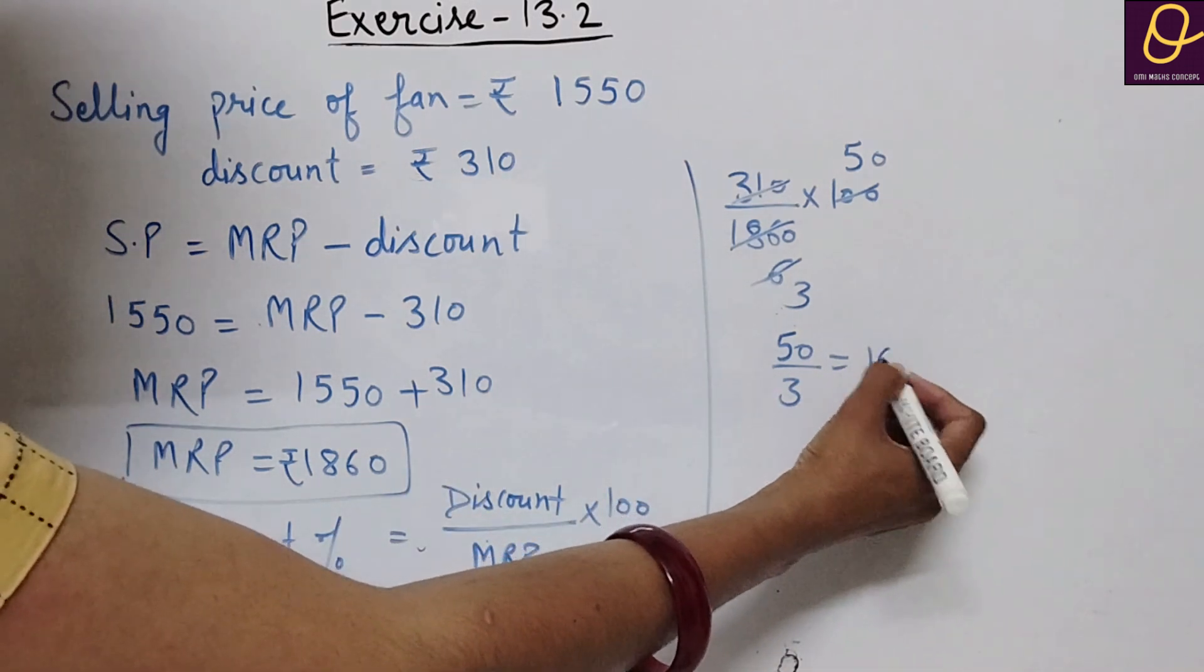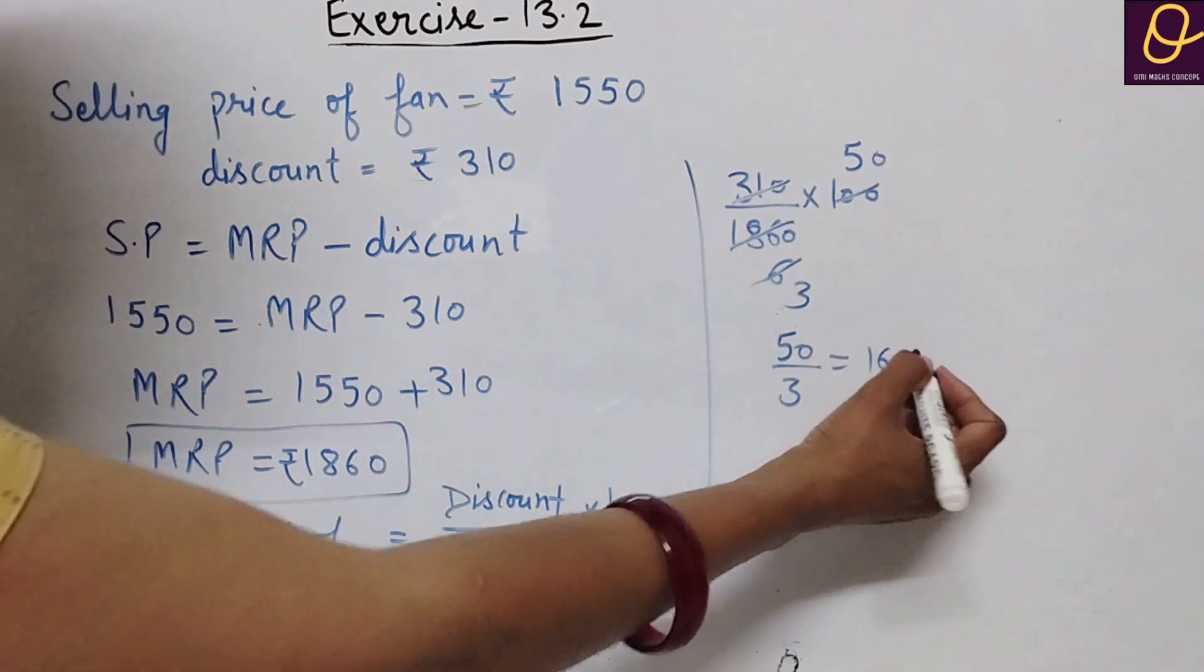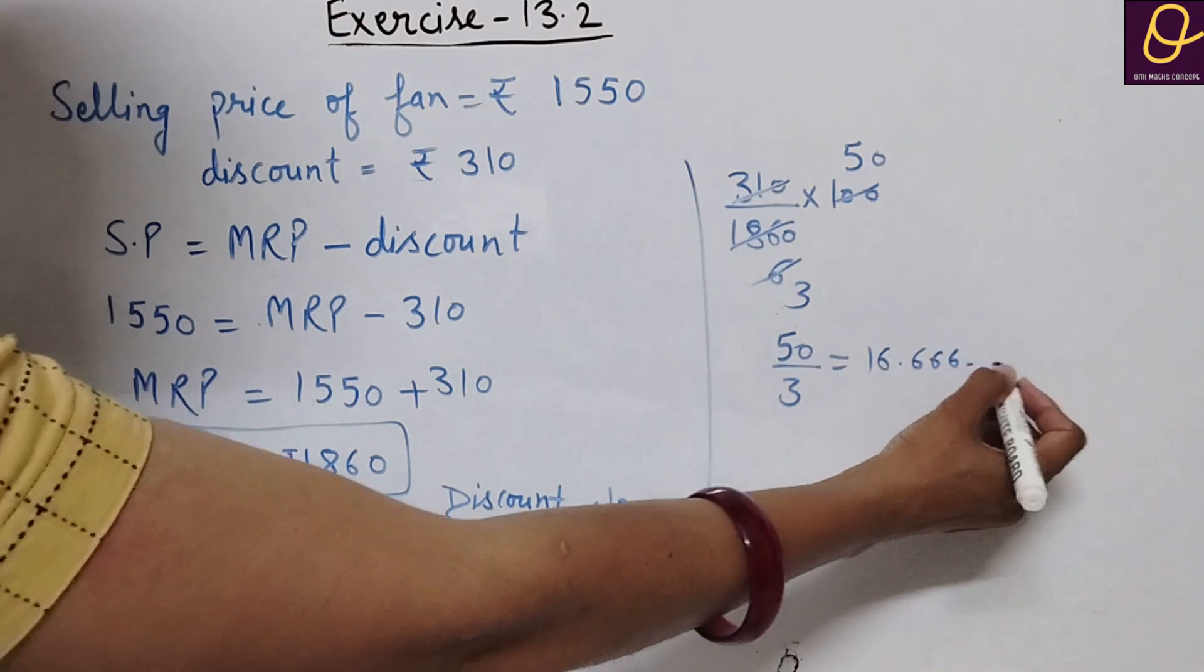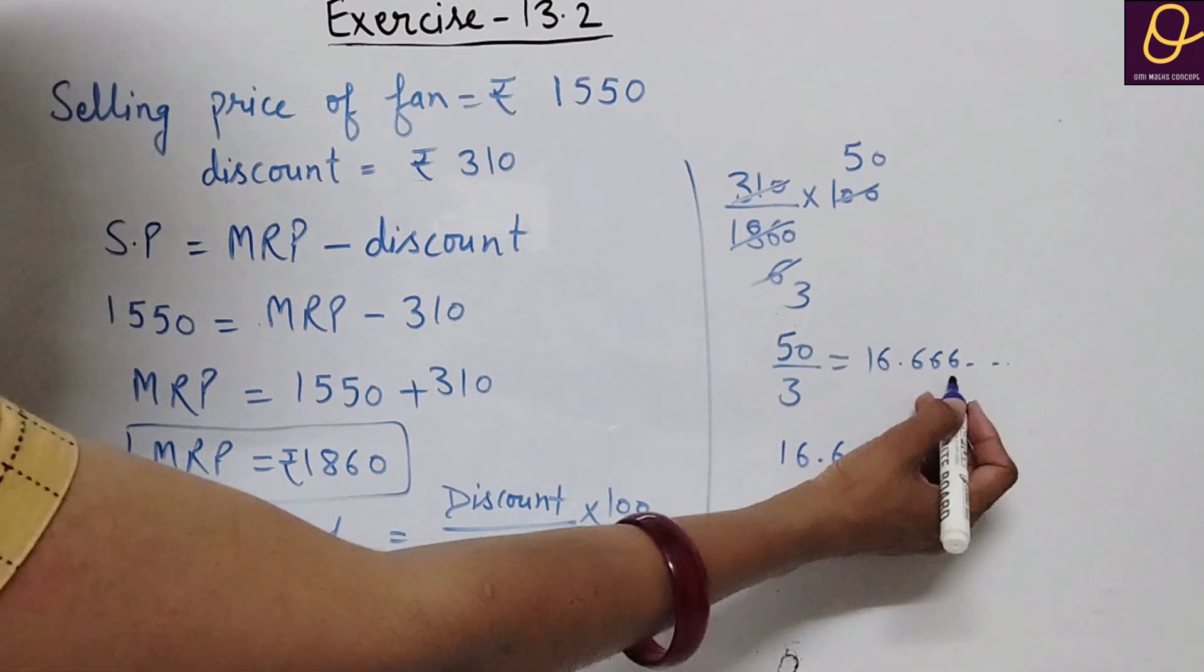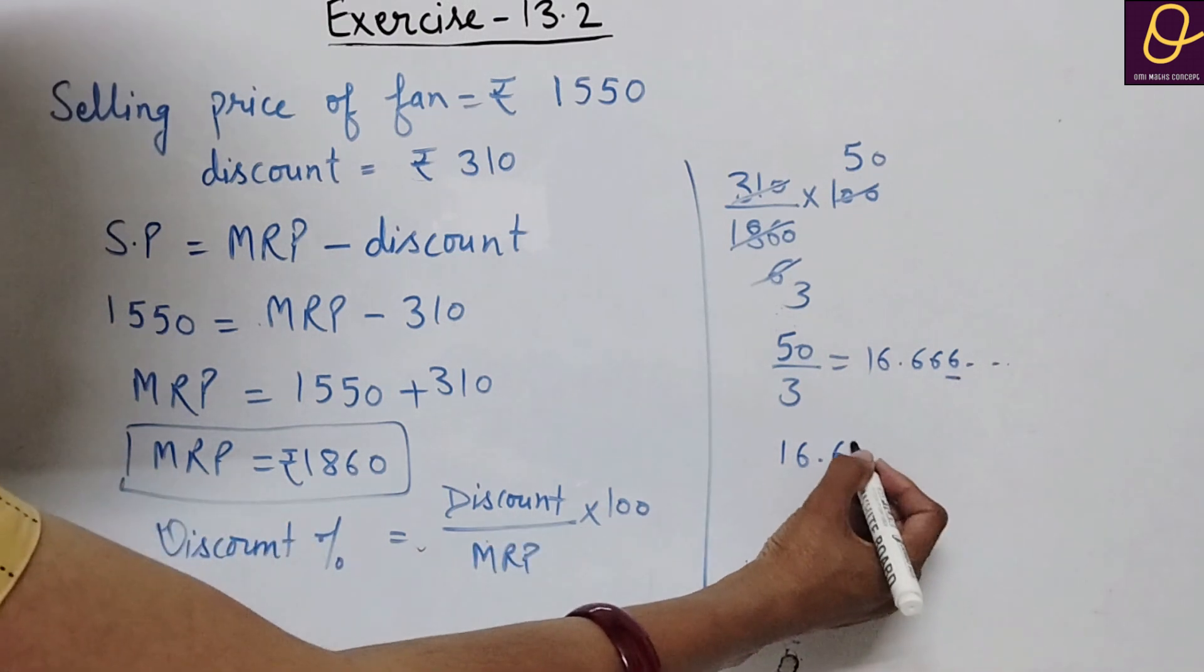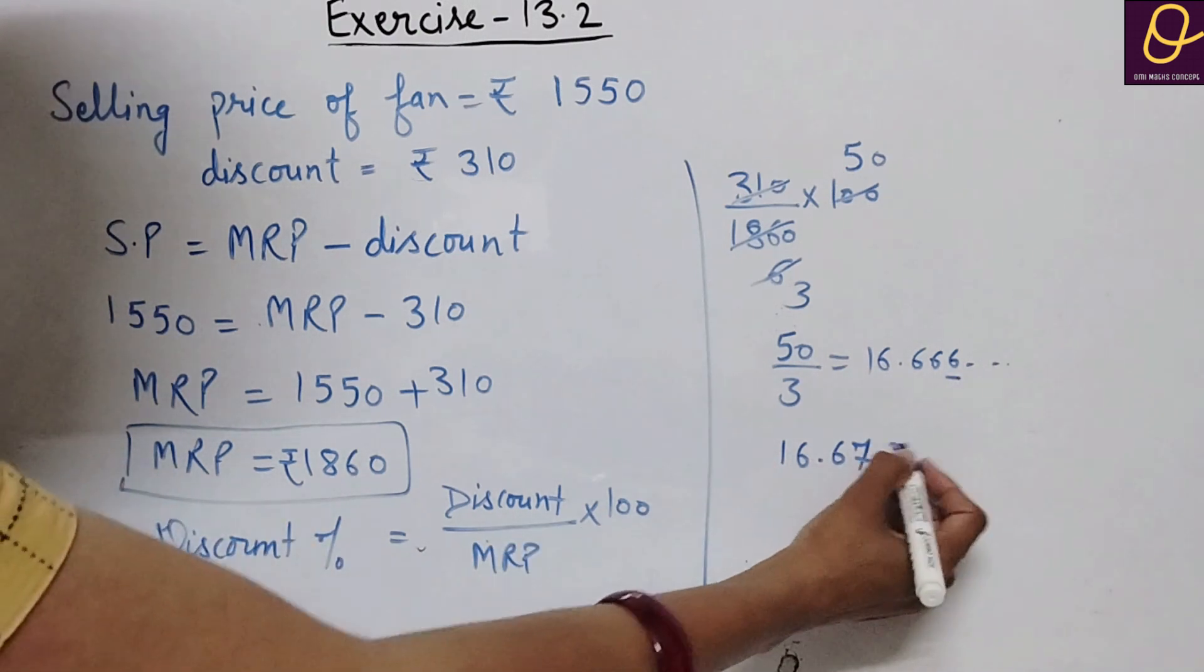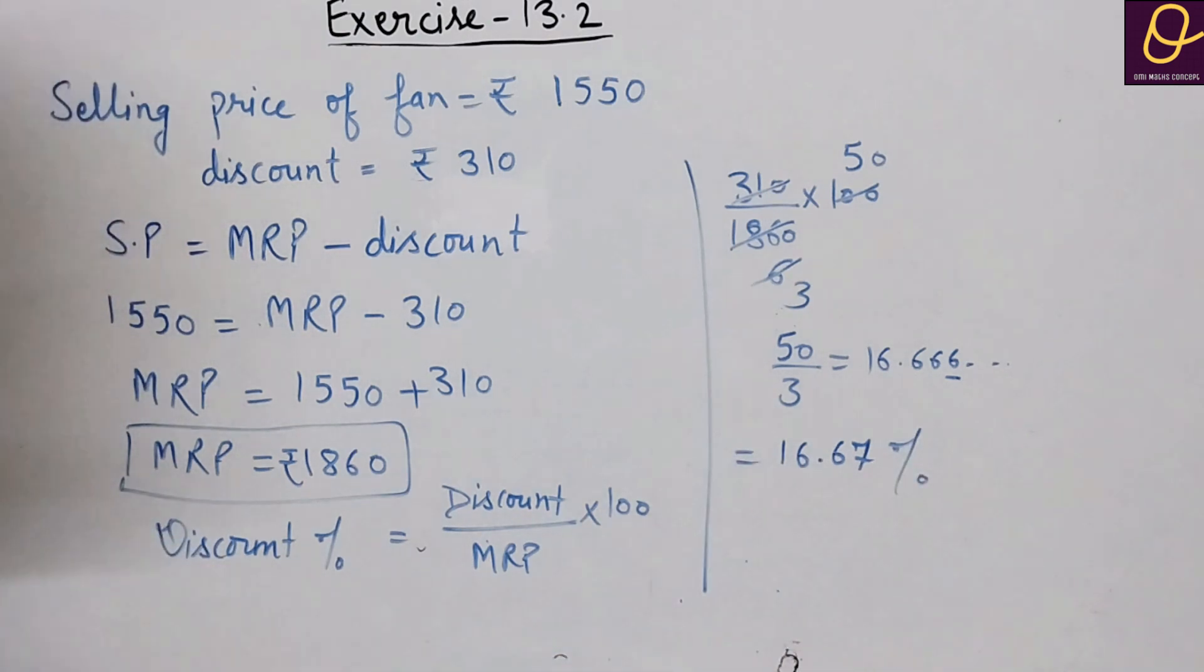Dividing gives 16.666 repeating. So we can write this approximately as 16.67 percent. This is the discount rate.